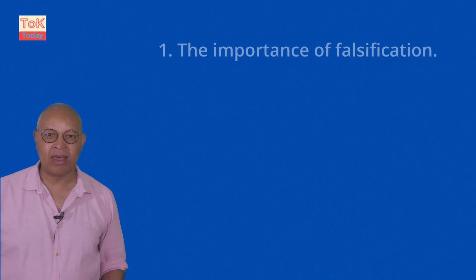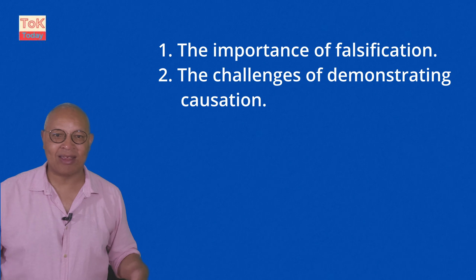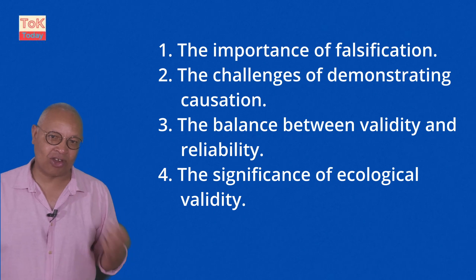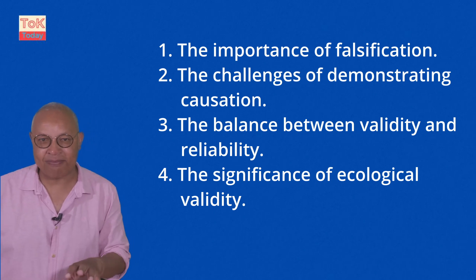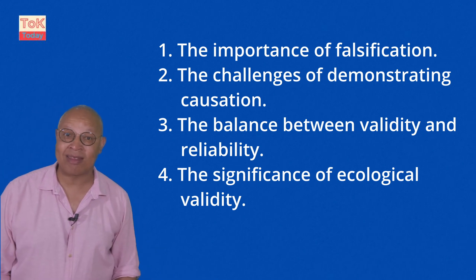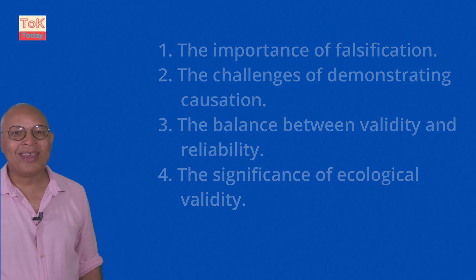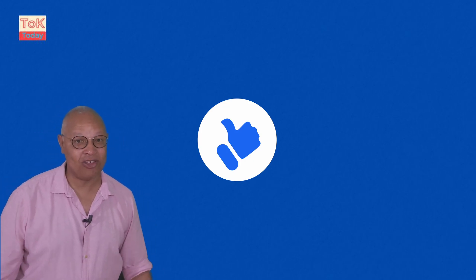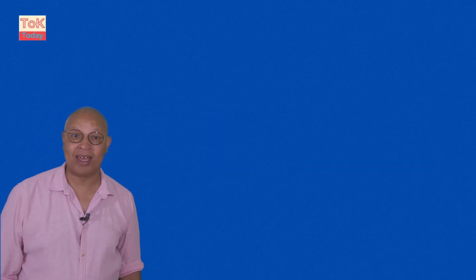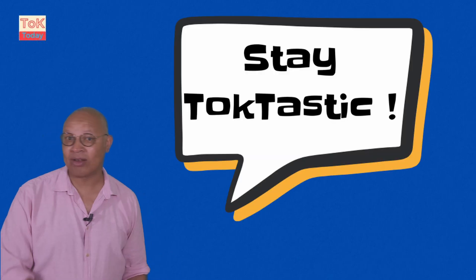In conclusion, evaluating natural scientific knowledge requires a nuanced understanding of these key points: the importance of falsification, the challenges of demonstrating causation, the balance between validity and reliability, and the significance of ecological validity. By focusing on these aspects, you can develop better evaluation points on the complexities and strengths of the natural sciences in your TOK essay. If you've found this video useful, a like, subscribe, or comment are very much appreciated. Next up, we'll be looking at evaluation points for the human sciences — I hope to see you on that video. Stay top-tastic, my friends.